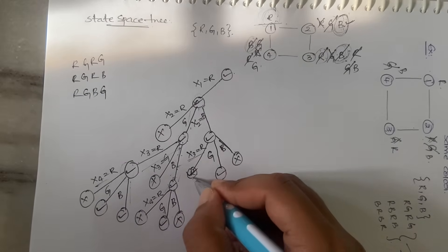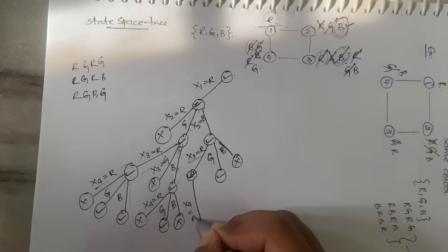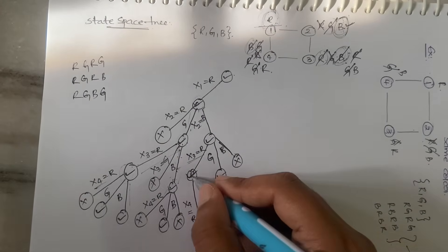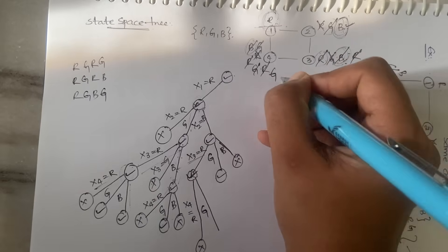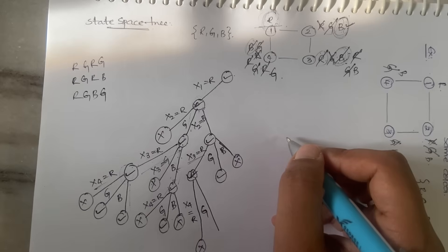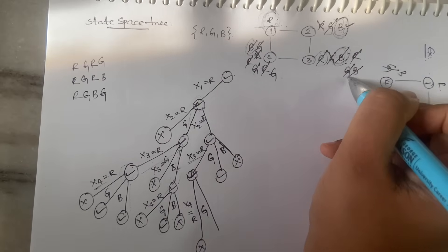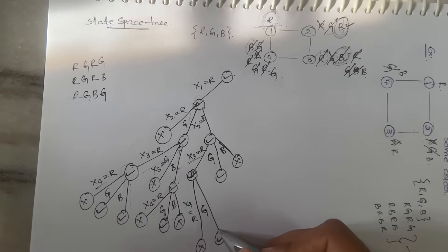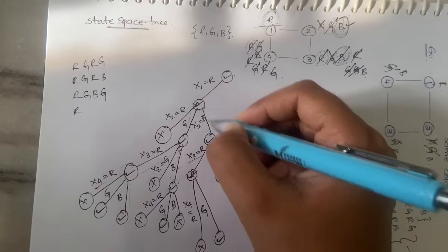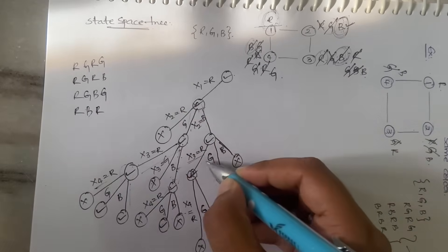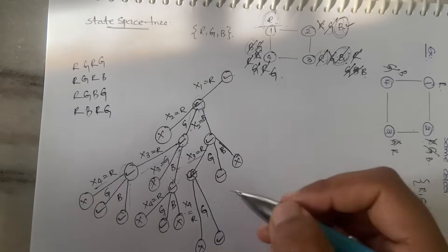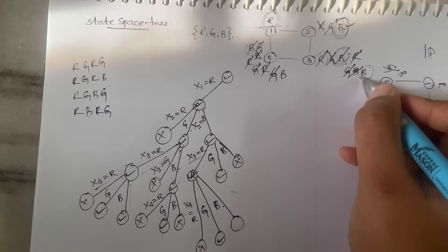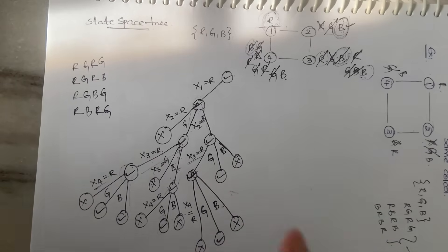Expanding the next node: x4 = red is not accepted because x1 already has red. x4 = green is accepted because there is no green at x3 or x1 in adjacent positions. So the solution R-B-R-G is found. x4 = blue is not accepted because x3 already has blue. Next, checking x3 = green under x2 = blue.